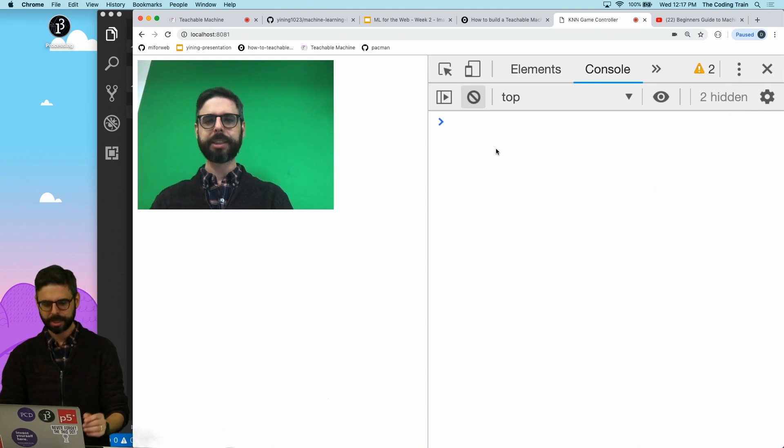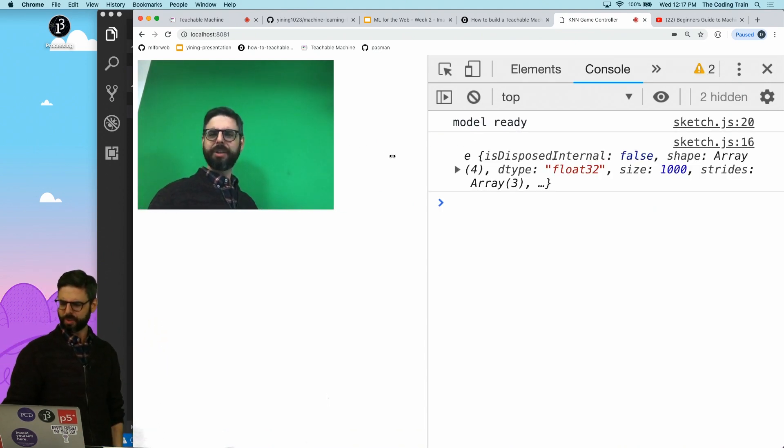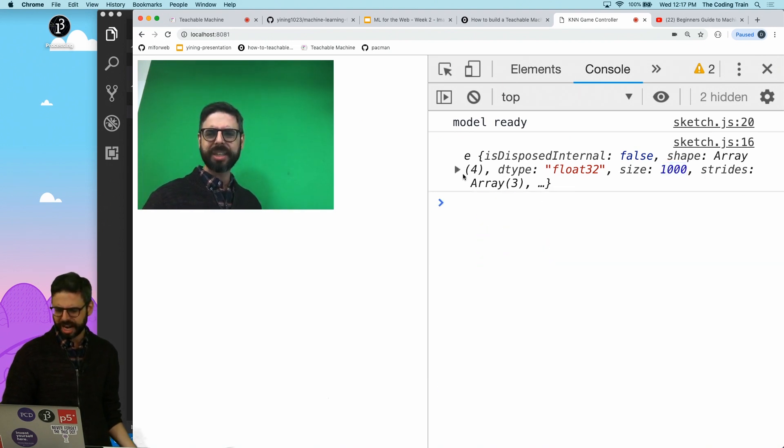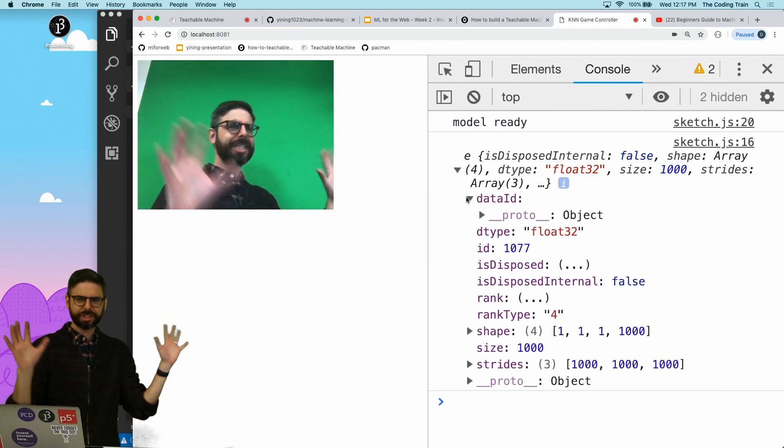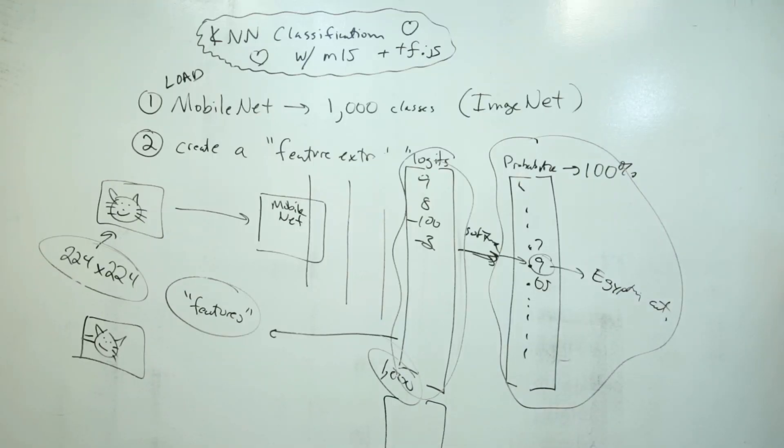I'm going to say console log logits. Let's see what happens. Let me refresh this. The model is loaded. Now I'm going to click. And you see, what? Well, this looks kind of a D type float 32. Floating point numbers. There's a thousand of them. What's all this nonsense? Look at all this. This looks crazy.